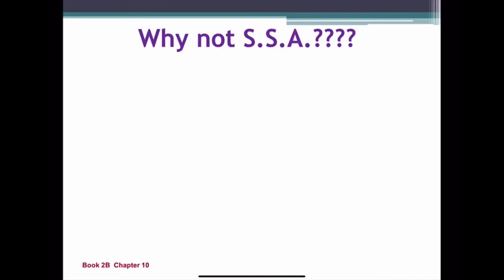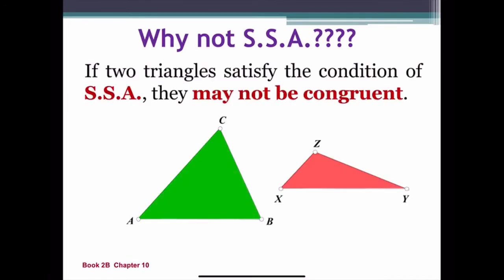Today I'm going to explain why we can't use SSA and AAA to prove a congruent triangle. So there are two triangles - obviously, they are not equal, they are not congruent. Green one is bigger, red one is smaller,